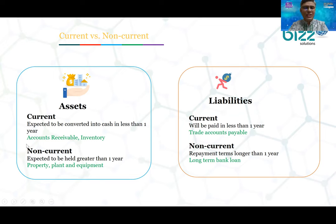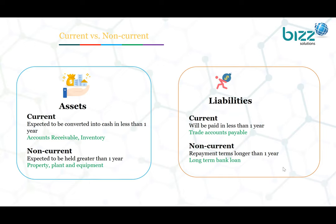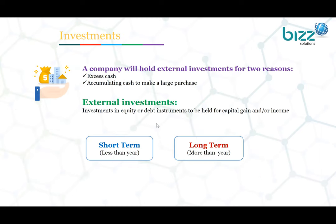Non-current assets include equipment. Similarly, current liabilities are those to be paid within one year, such as trade payables and salaries payable. Non-current liabilities include long-term bank loans paid over multiple years. Regarding investments, a company holds external investment for two reasons: excess cash invested for accumulation, or extended investment in equity or debt instruments held for capital gain or income.